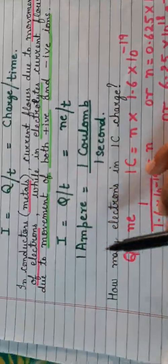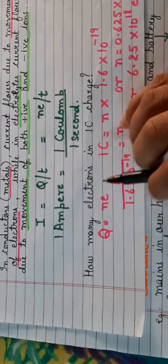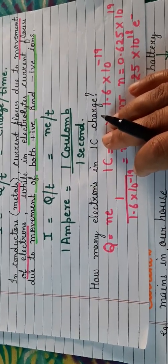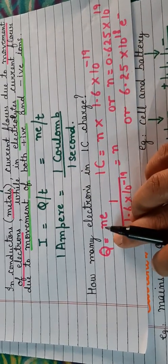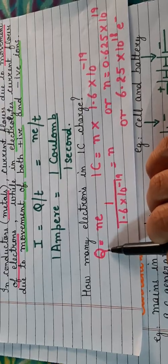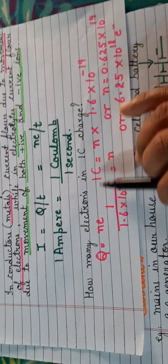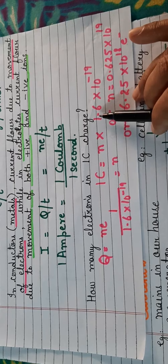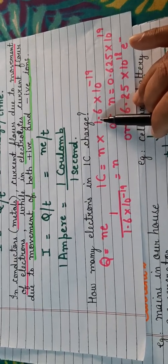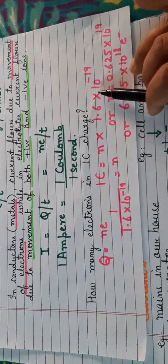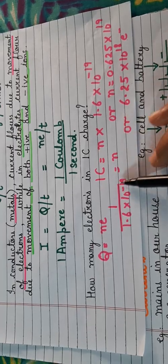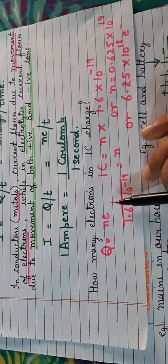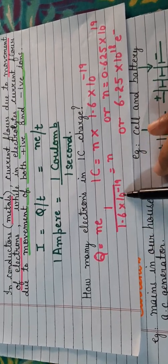Now let us look at a question normally asked for 2 marks. Given a charge of 1 coulomb, find the number of electrons. We use the formula Q = NE, where Q is 1 coulomb. We need to find N, and E = 1.6 × 10⁻¹⁹ coulombs. Shifting 1.6 to the other side: N = 1 / (1.6 × 10⁻¹⁹). Getting rid of the decimal: N = 10 / (16 × 10⁻¹⁹).